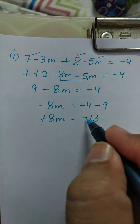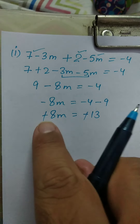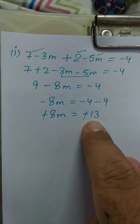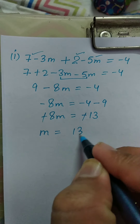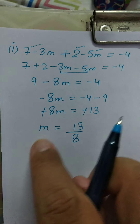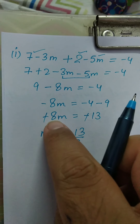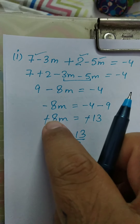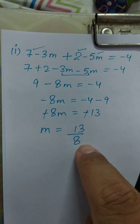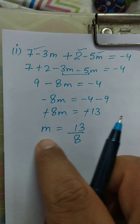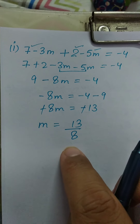Cut the minus on both sides — minus and minus cancel. M is equal to 13 upon 8. The 8 in LHS was in multiplication; when shifted to RHS, it changes to division. So M is equal to 13 upon 8. This is the answer.